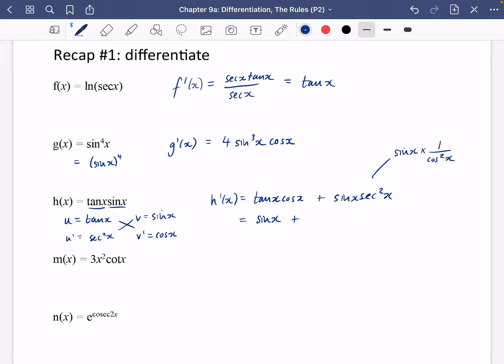One of those over cos squareds is going to create a tan x and then you're still going to have a sec x as well. So it's just worth thinking about doing some of the simplifying where possible.